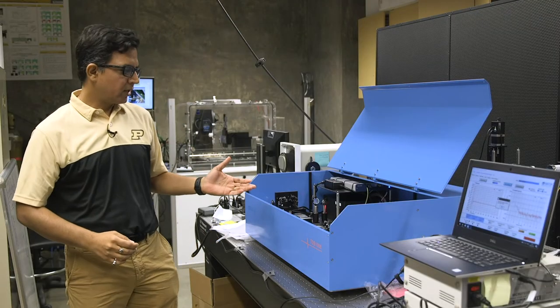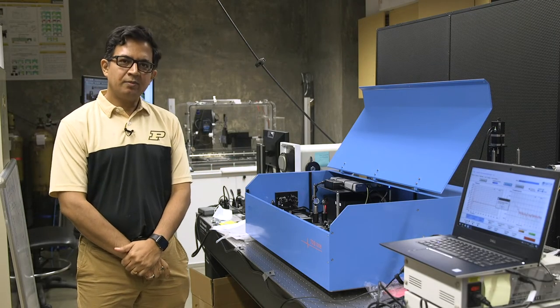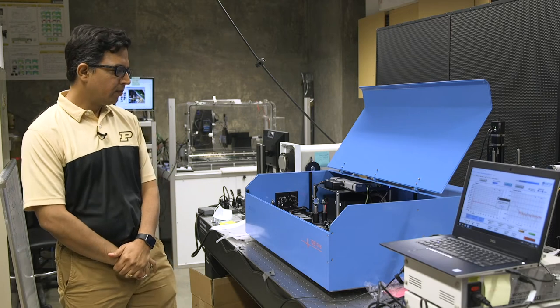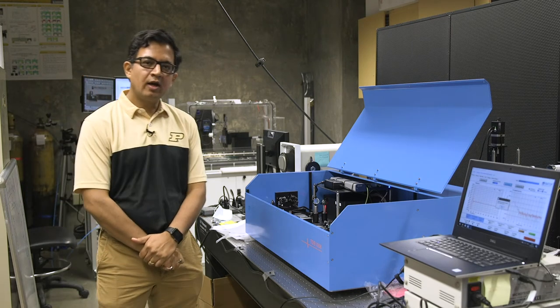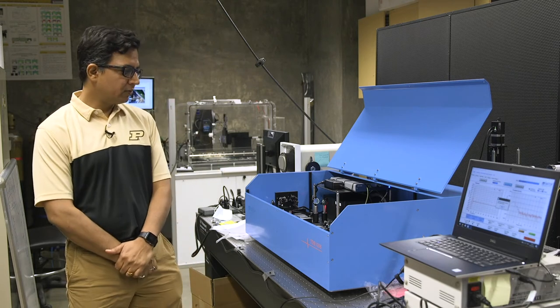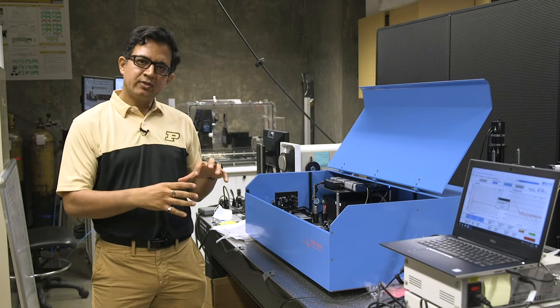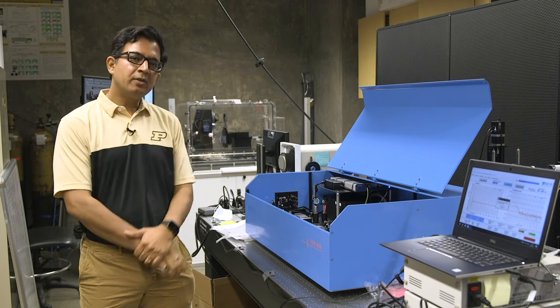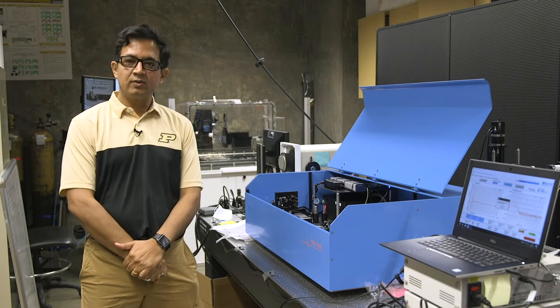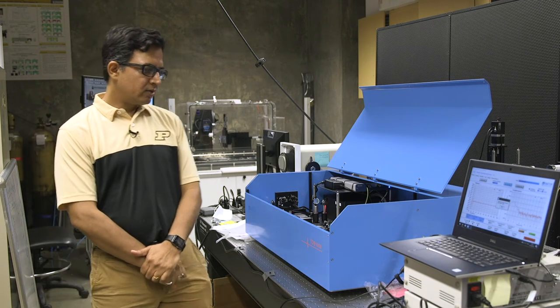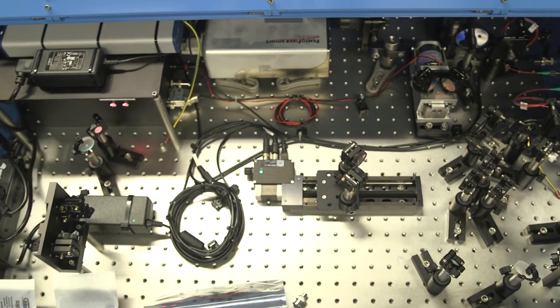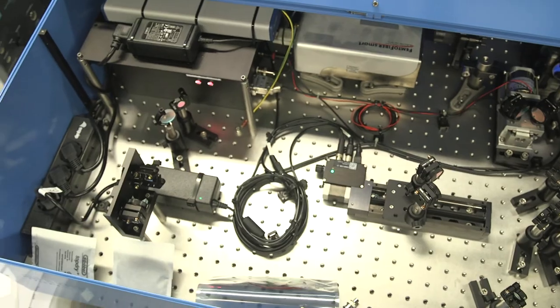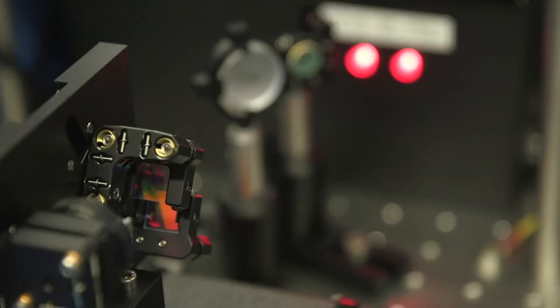This is a terahertz spectroscopy setup that we have in lab. Terahertz are waves that lie somewhere between microwaves and millimeter waves. They are much less damaging compared to X-rays. Terahertz spectroscopy is a new technology where we want to be able to see inside things as they are deforming or exploding.